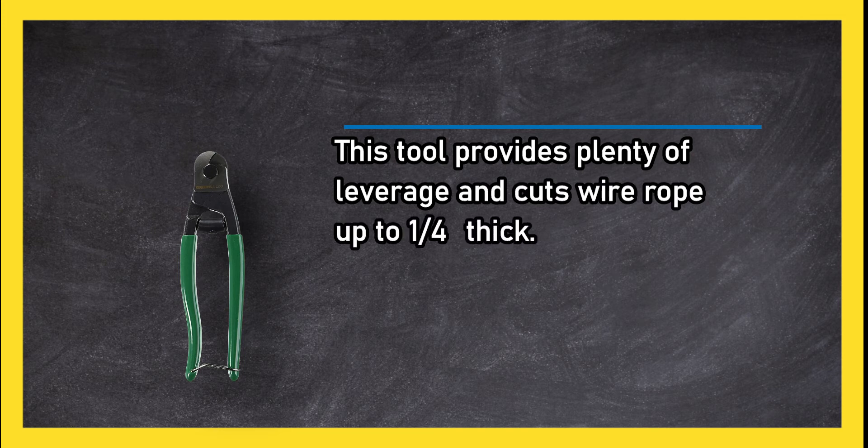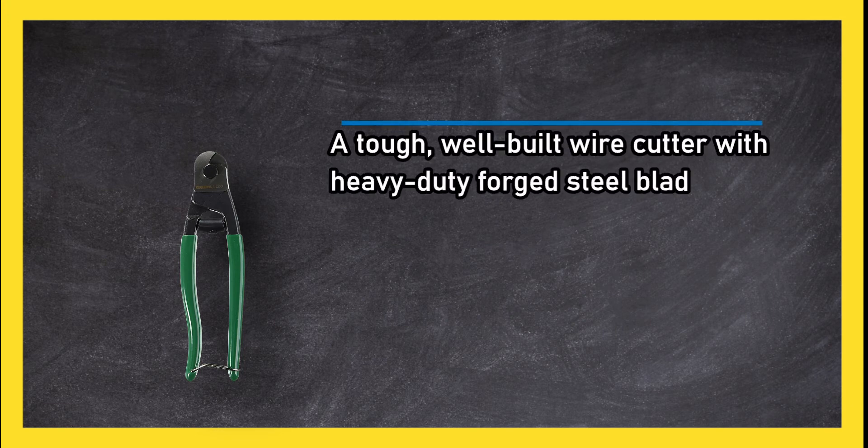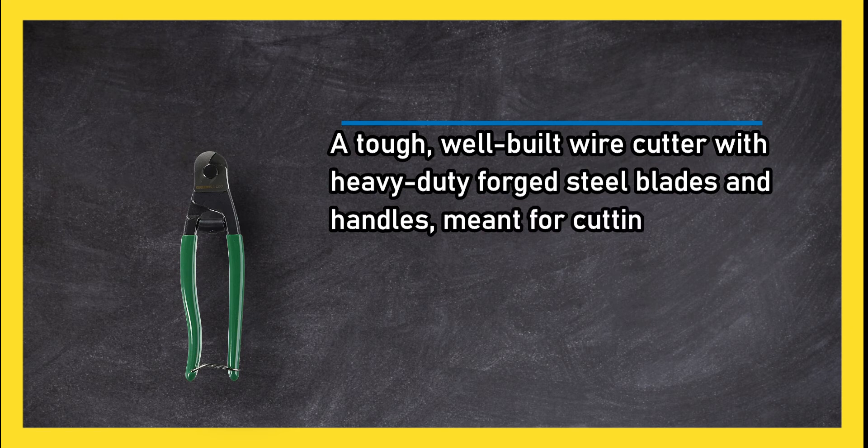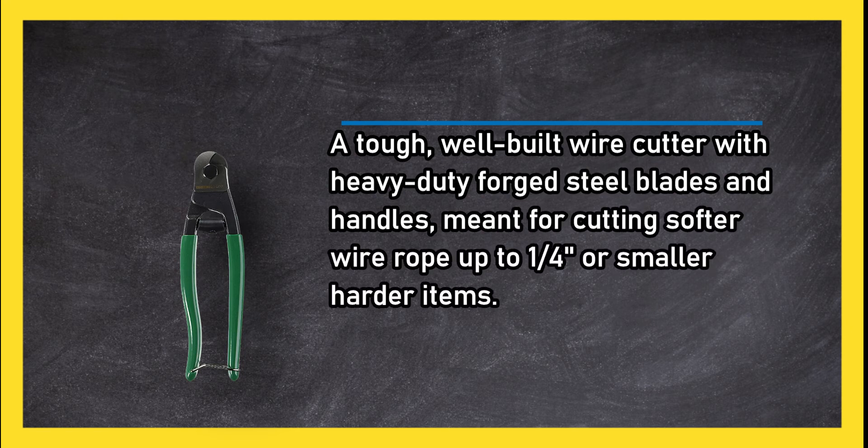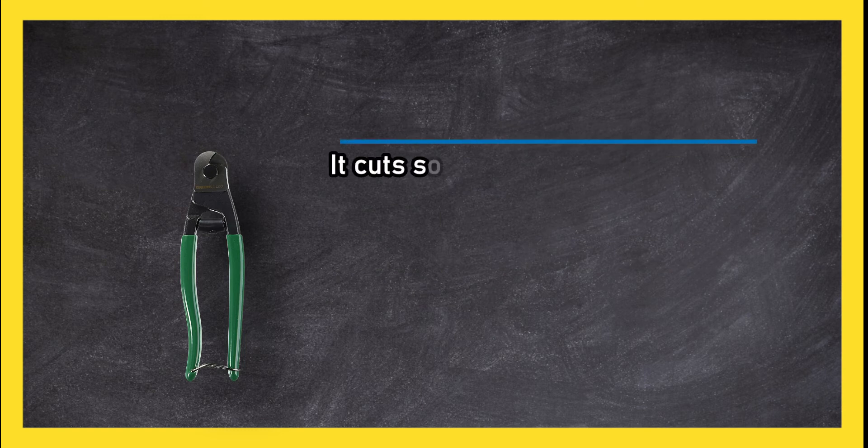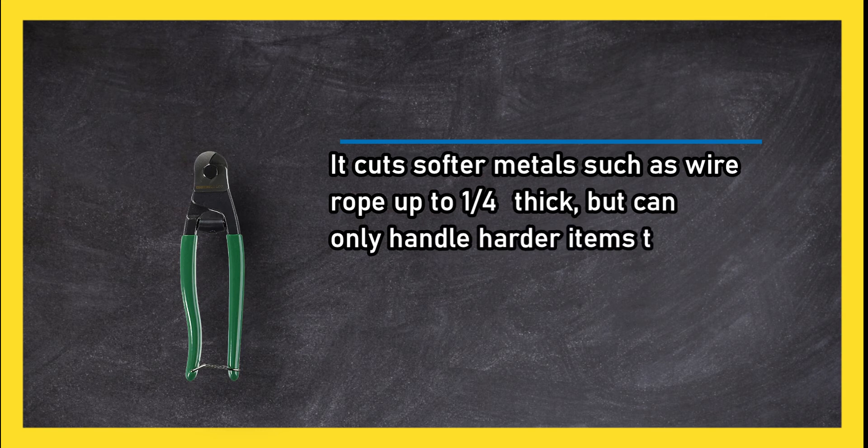A tough, well-built wire cutter with heavy-duty forged steel blades and handles meant for cutting softer wire rope up to one quarter inch or smaller harder items. It cuts softer metals such as wire rope up to one quarter of an inch thick but can only handle harder items that are a bit smaller than that.